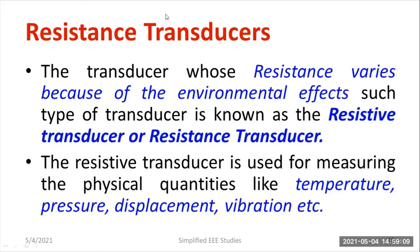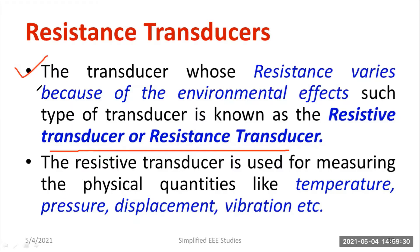First and foremost, let us understand what is meant by a resistive transducer, or you can call it a resistance transducer. It is a transducer whose resistance varies because of environmental effects such as temperature, pressure, etc. Temperature, pressure, etc. are non-electrical quantities, and you will get the output in terms of resistance, which is an electrical quantity. So a non-electrical quantity is converted into an electrical quantity.